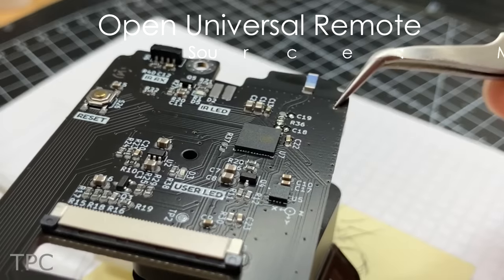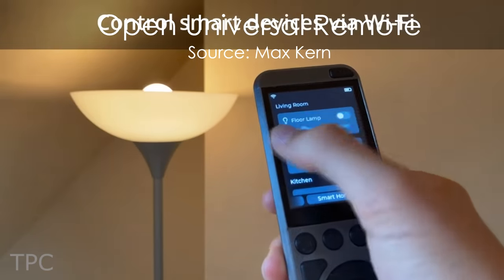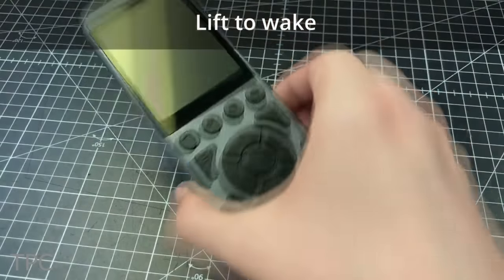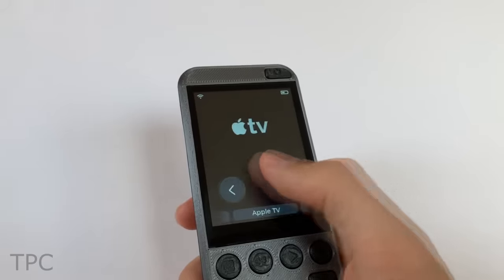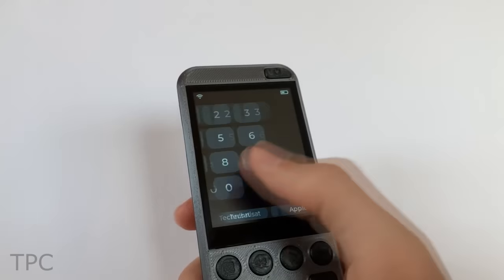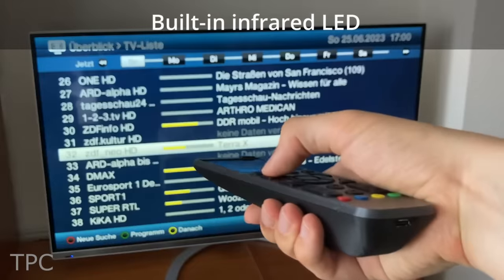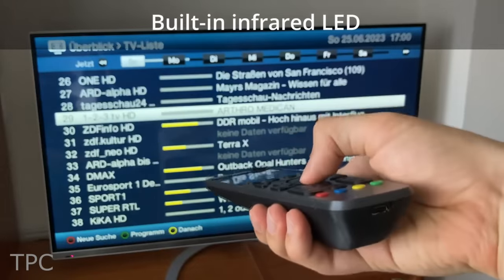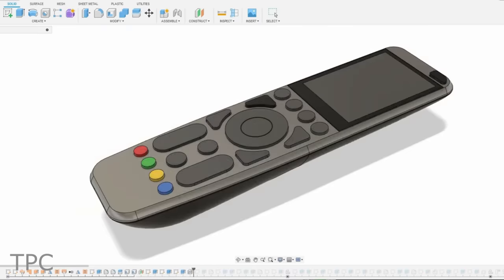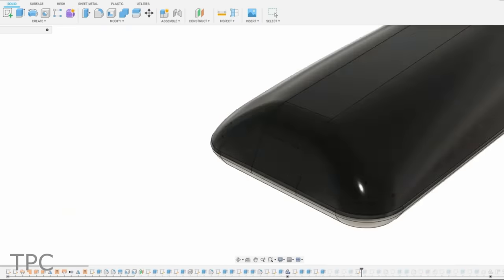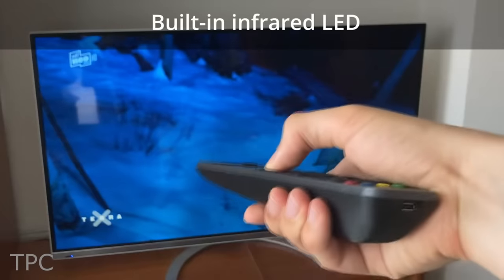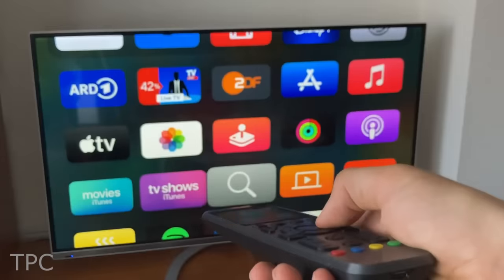If you want to build a universal remote to control any appliance, then this project might interest you. With a 2.8-inches capacitive touchscreen, this remote provides an intuitive and snappy user interface for switching devices and settings. You don't need any hub or docking station, as the remote features infrared, Wi-Fi, and Bluetooth connectivity.